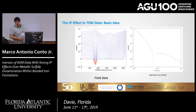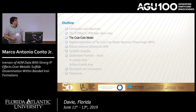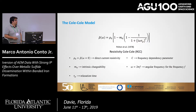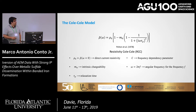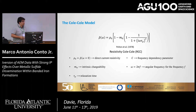The ordinary approach to deal with the IP effect is the Cole-Cole model — a frequency-dependent complex resistivity function that depends on four parameters: rho-zero, the zero-frequency (DC) resistivity; eta-zero, the intrinsic chargeability; tau, the time decay constant or relaxation time; and C, the parameter governing the frequency dependence of the resistivity model. Omega here is the angular frequency.